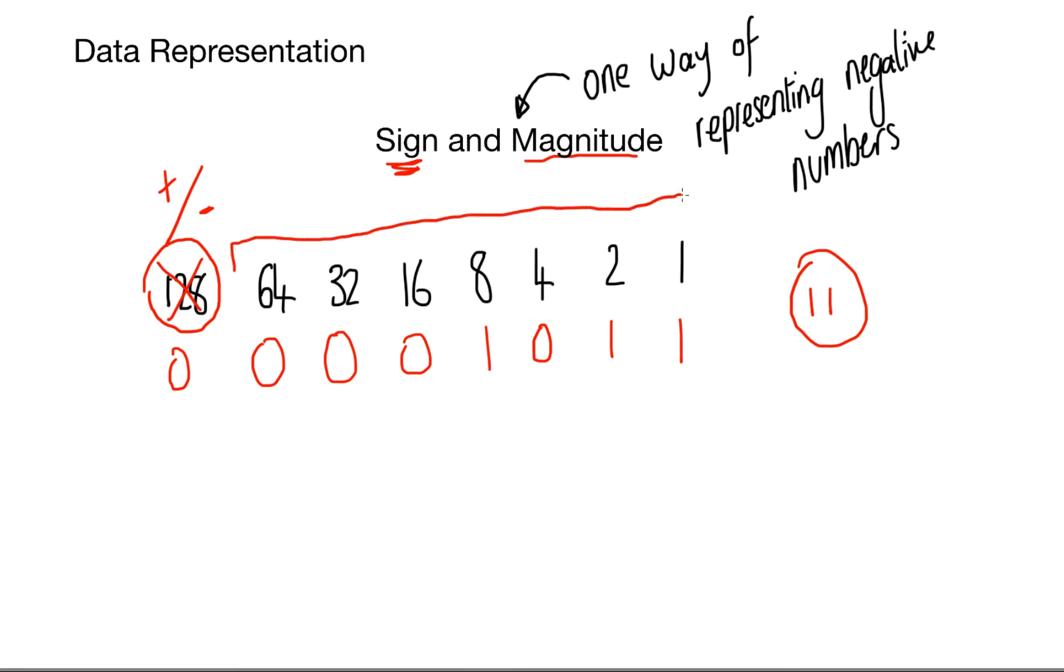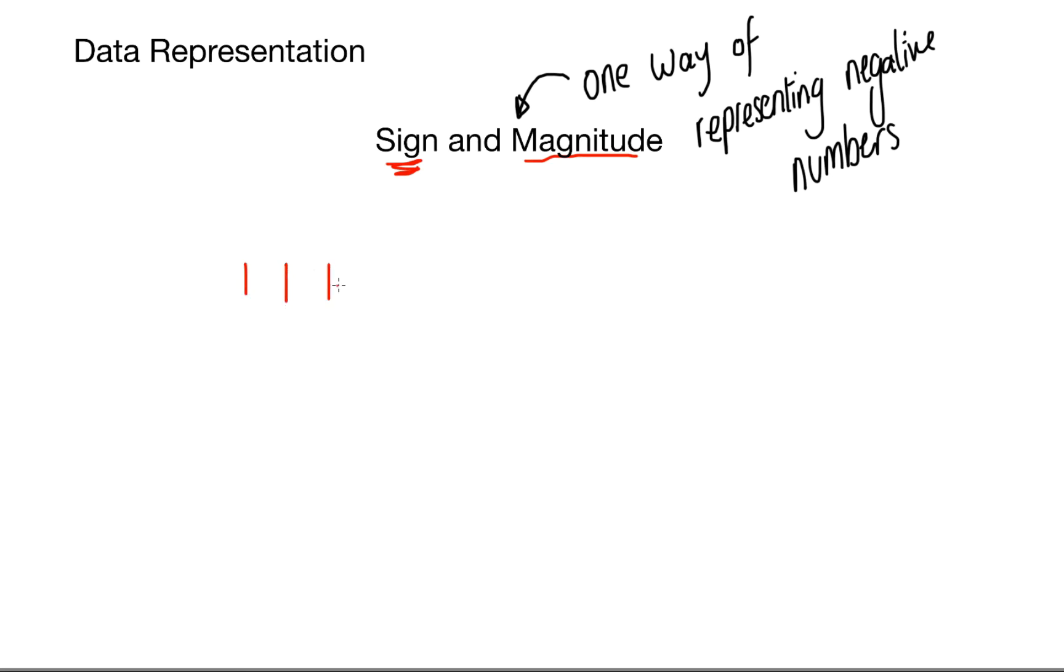The rest of the number is then used as the magnitude and that represents the number. If we put a 1 in the signed bit, we can represent a negative number, and if we change the signed bit to 0, we're representing a positive number.